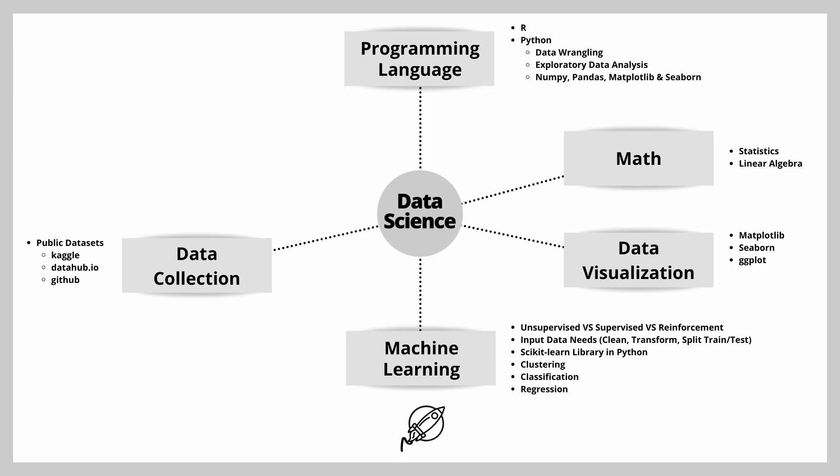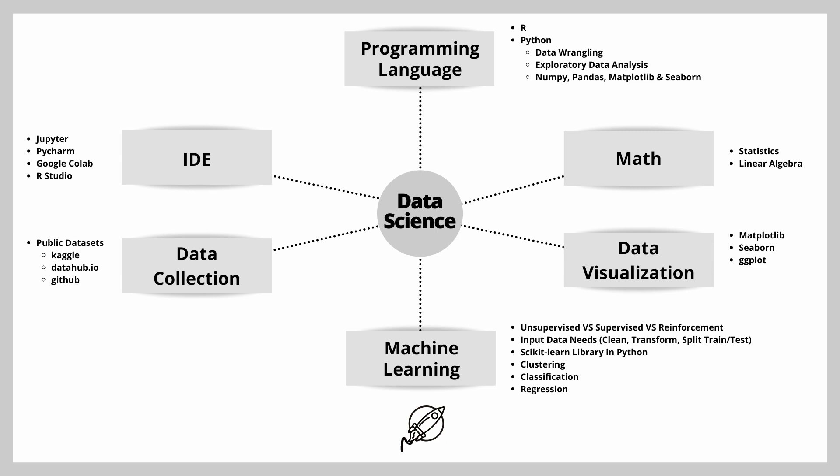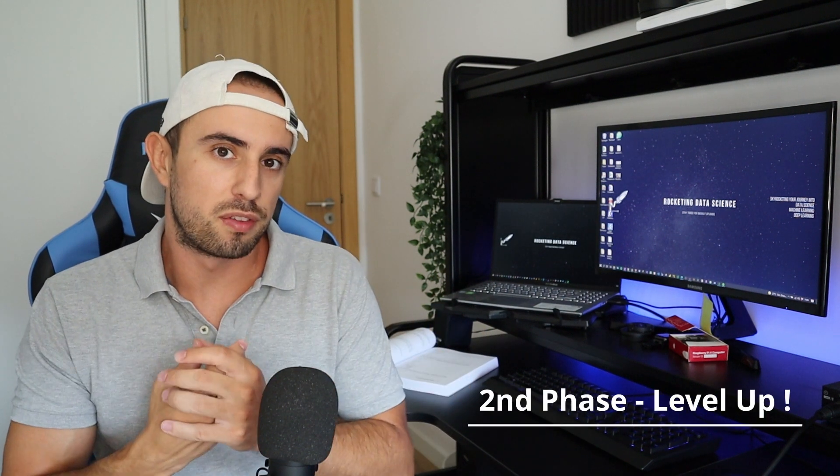For data collection at the first phase, start by looking at datasets online such as Kaggle, Data Hub, and some GitHub repositories, where you'll find basic and small datasets that are great to learn from. Before completing the first phase, you should also learn an IDE. For R you have RStudio, and for Python you have Jupyter Notebooks, PyCharm, and Google Colab. I personally use Jupyter Notebook, but any of those is fine.